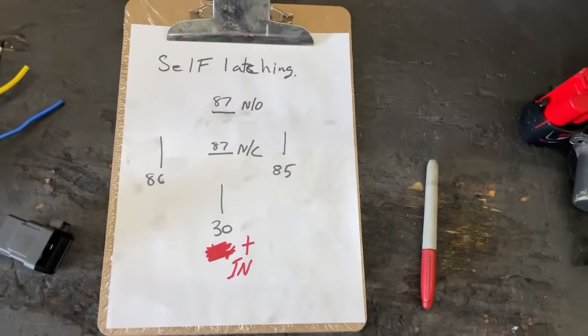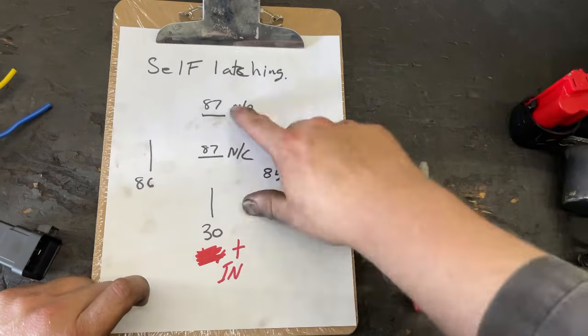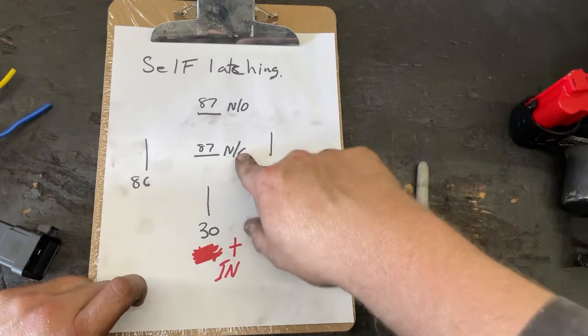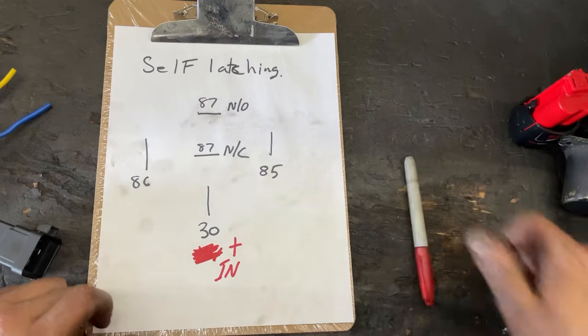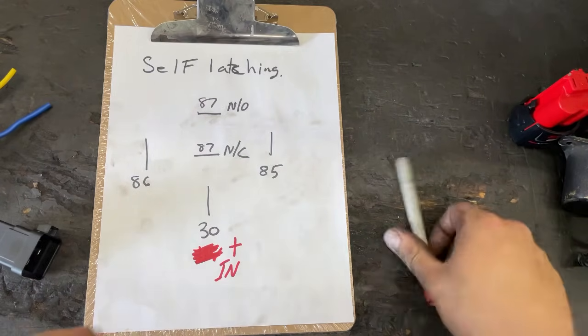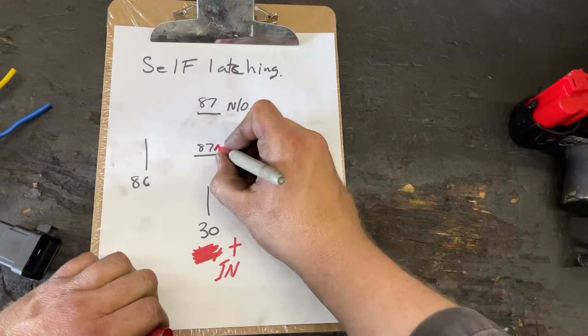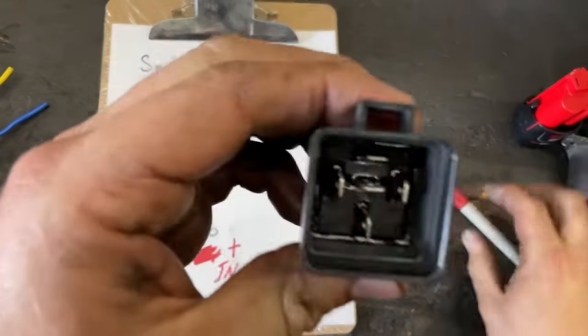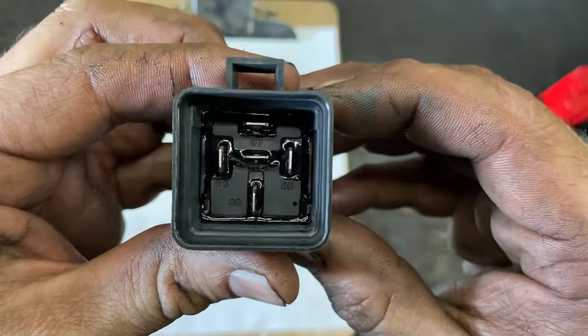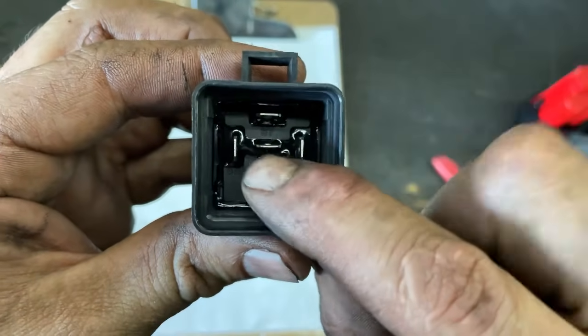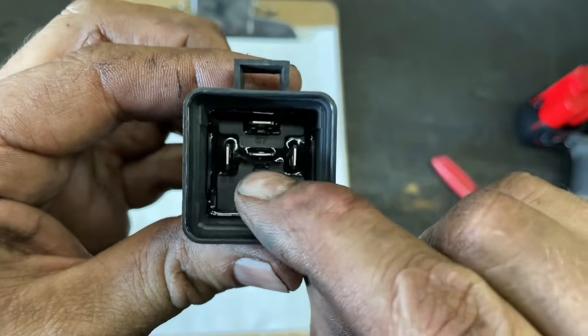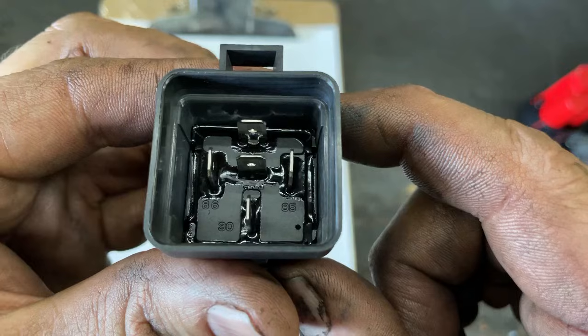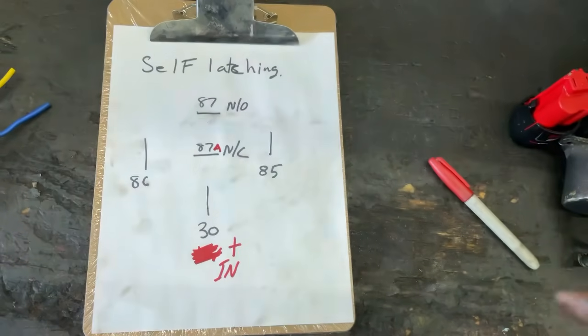Now what it was, I actually had the terminals on your relay backwards. This is supposed to be normally open, this is supposed to be normally closed. I had those two backwards. And actually something else, this should be 87a on the actual relay. I don't know if you guys will be able to see, oh yeah you can see in there. You can see how they're marked, the 87a is this one right here, you just can't see it because they've sealed it, so you can kind of see it in there a little bit.